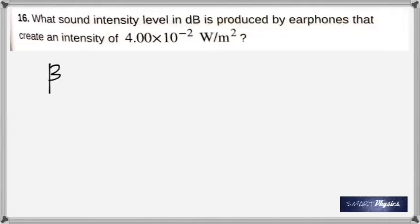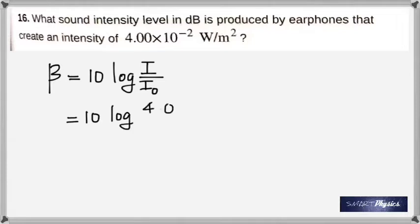The next one: What sound intensity in decibels is produced by earphones that create an intensity of 4 times 10 to the negative 2? We got to change from the conventional units of watt per meter squared to decibels. And the formula is beta is 10 log I by I0, where I0 is the threshold of hearing, it's 10 to the power negative 12.